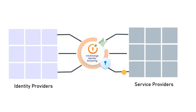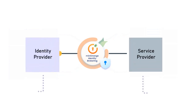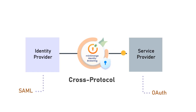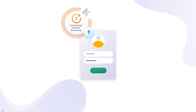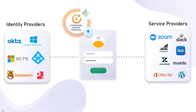An identity brokering solution enables you to connect an application and an identity provider that may support different protocols, and you no longer need to be concerned about cross-protocol support. Using an identity brokering solution, multiple identity providers or identity sources can be configured to enable SSO into single or multiple applications.